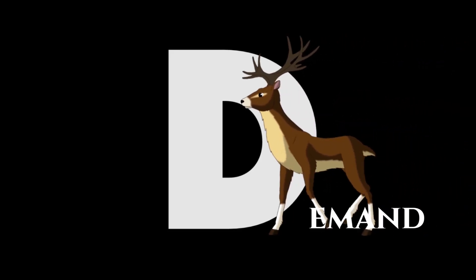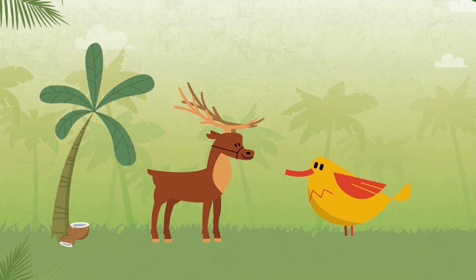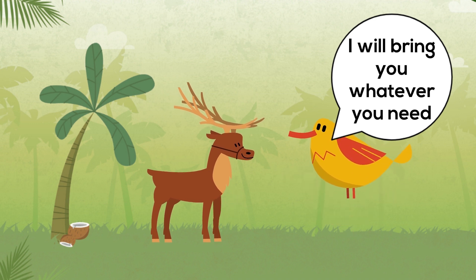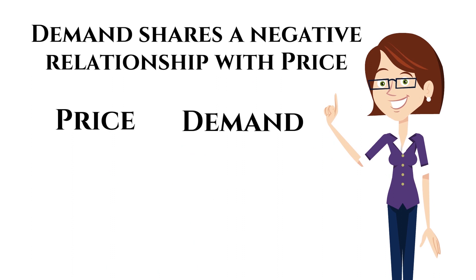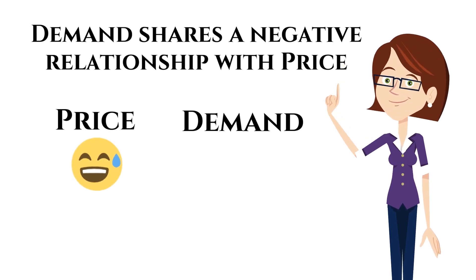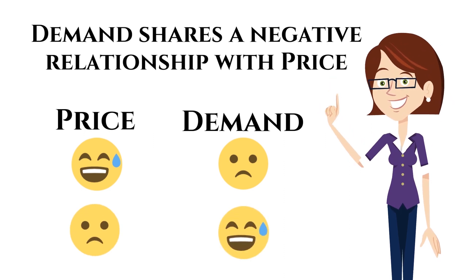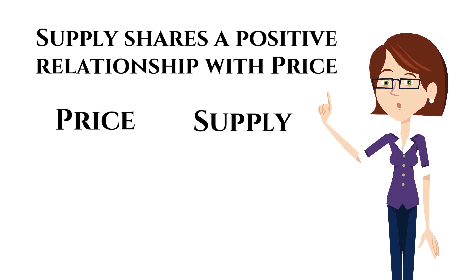This is the story of three friends: demand, supply, and price. Demand and supply love each other, and supply takes care of the needs of demand. Price is a good friend of both supply and demand, but price also loves demand — both supply and demand know about this. Demand shares a negative relationship with price: if price is happy, demand will be sad, and if price is sad, demand will be happy. On the other hand, supply shares a positive relationship with price: if price is happy, supply is also happy.